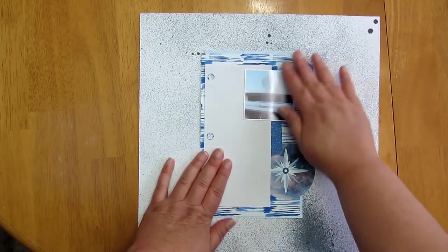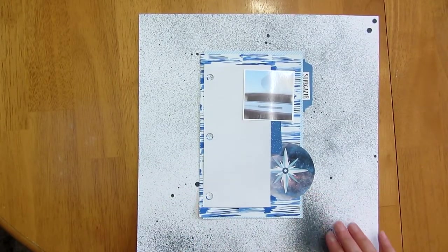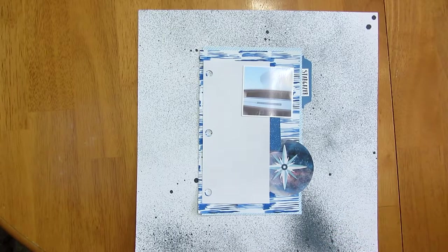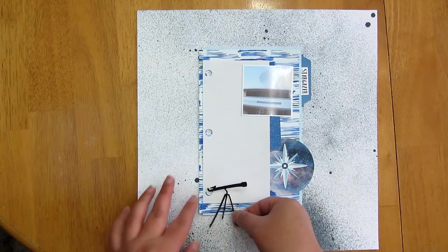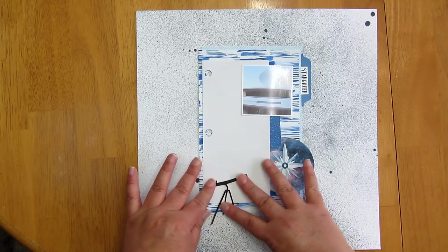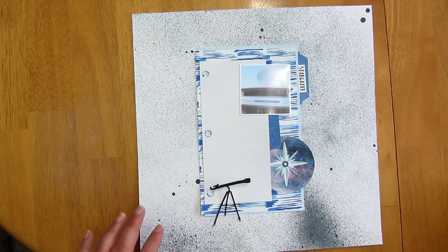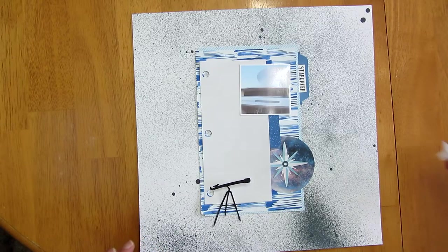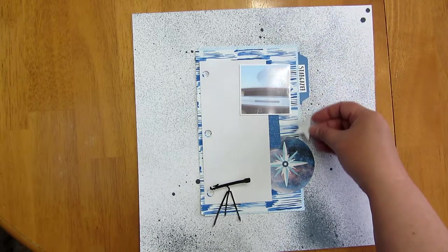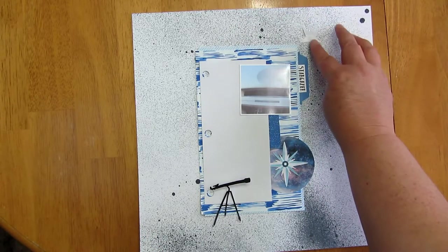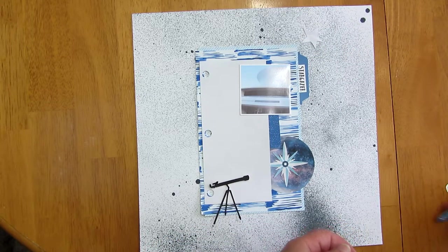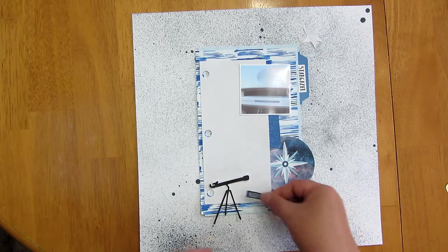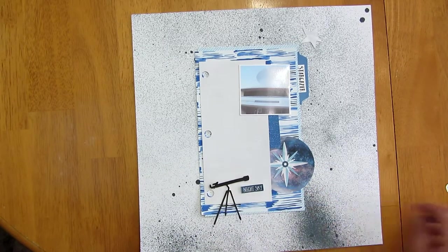It's not wanting to flow. There we go. And, then I've got to decide. I think I'm going to make it just a little bit to the left. Because, the paint's a little bit heavier on the right side. And, again, I'm not worried about it being super straight or super centered. So, there's the basic of it. And, then I also printed off some little elements that I thought would be kind of cute to add. Like this little telescope.